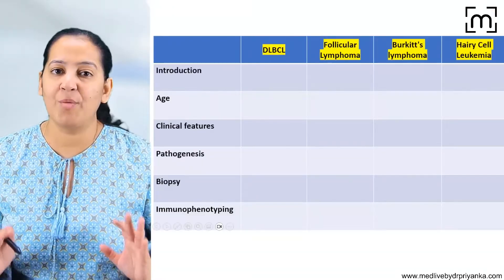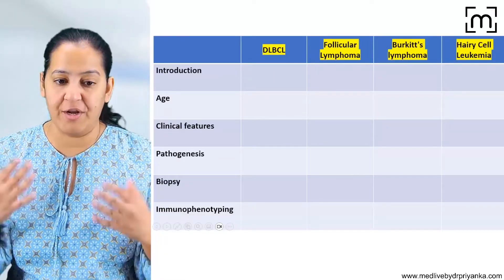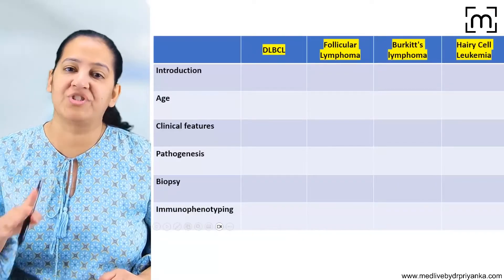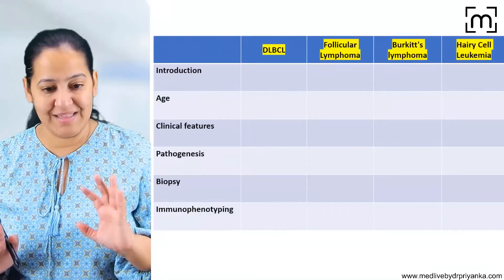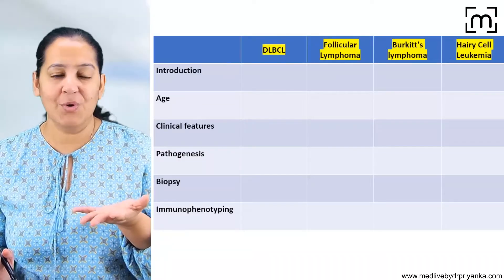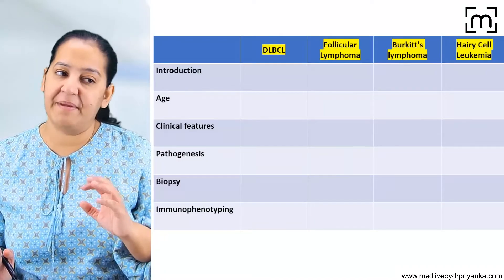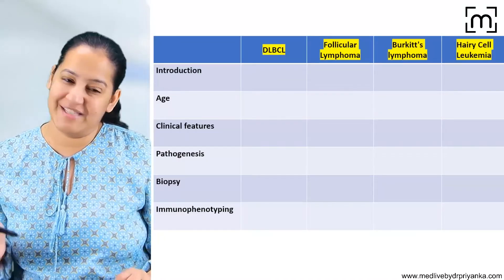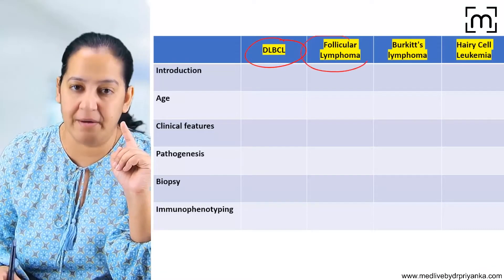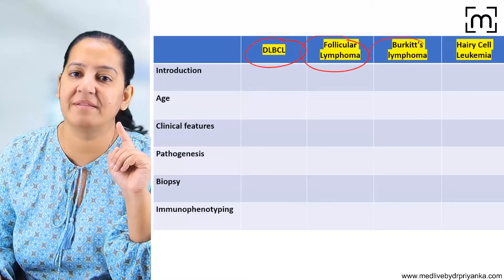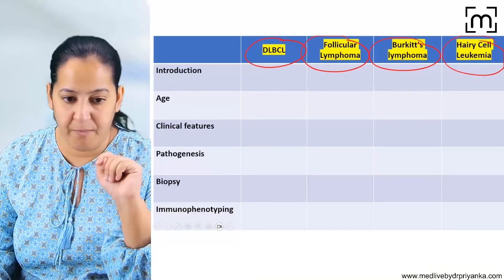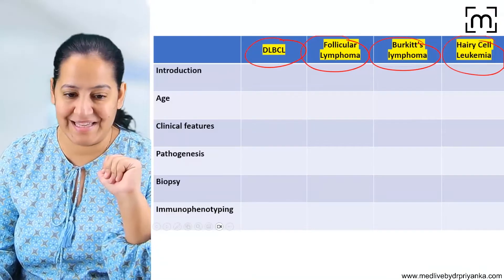I request all students to take out your notebook and pen and make this table with me right now while watching the session. Don't delay — make it along with me so it fits in your permanent memory, and you can revise it quickly at the end. We will discuss DLBCL first, then Follicular Lymphoma, then Burkitt Lymphoma, and then Hairy Cell Leukemia or Lymphoma in sequence.